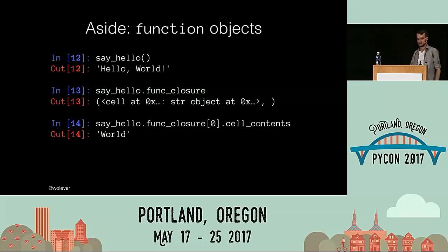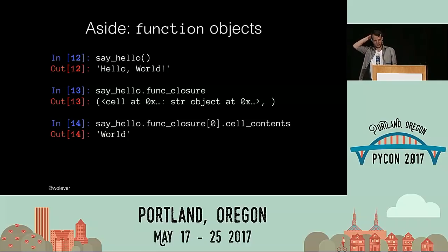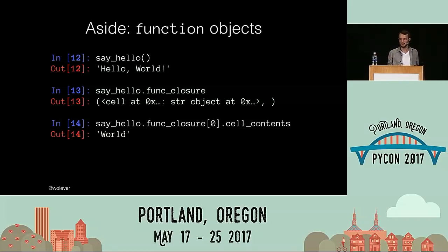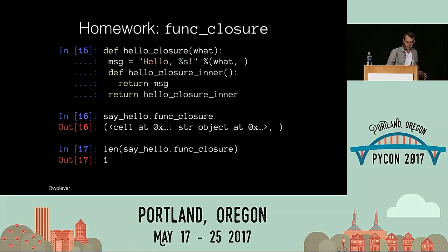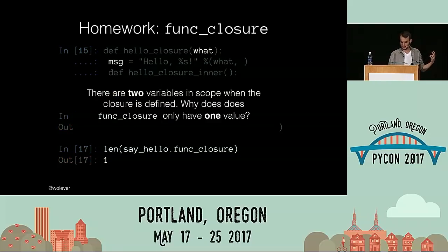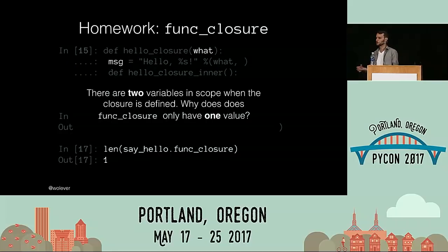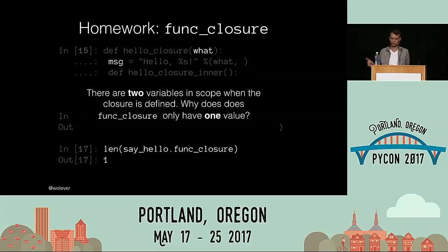One neat consequence of that is that it's actually possible, at least in theory, to build a serializer that takes one of these closures, serializes it, sends it across the wire, loads it up, and evaluates it on another computer exactly as it was. Now, this is a bad idea, and I really hope none of you do it. Your homework from here is to figure out why, even though there are actually two variables in scope when hello_closure_inner was defined, its func_closure tuple only has one element in it. What happened to that other variable?